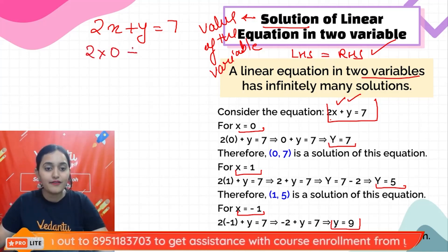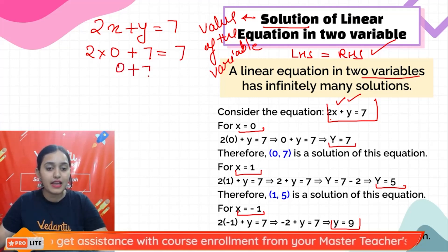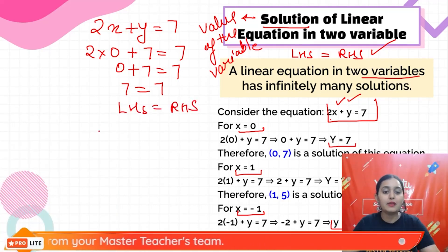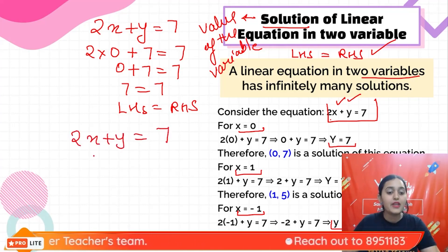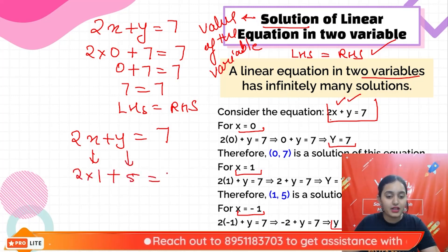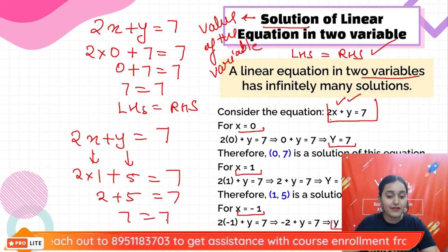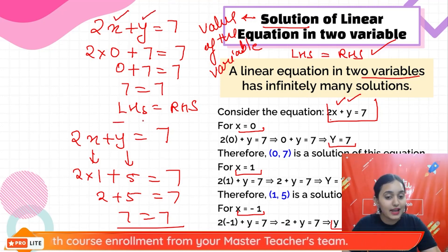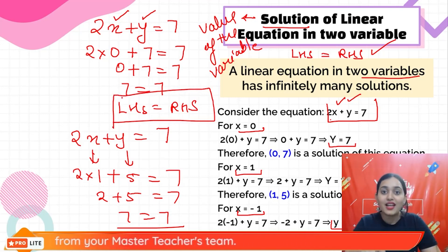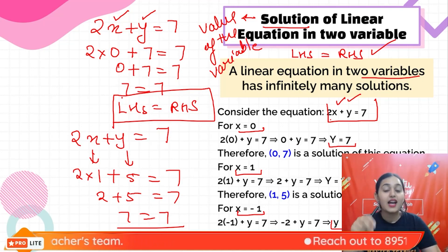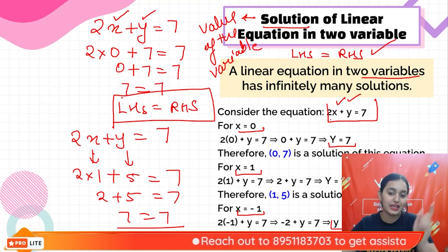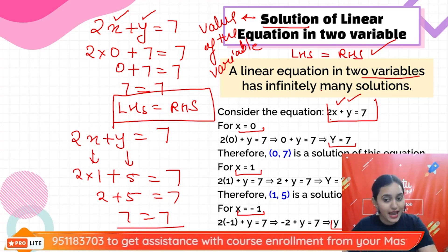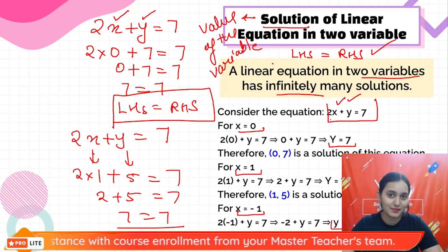Let me verify with examples. If x = 0 and y = 7: 2(0) + 7 = 7, so 7 = 7 — LHS equals RHS. If x = 1 and y = 5: 2(1) + 5 = 7, so 7 = 7 — again LHS equals RHS. This proves that solutions of a linear equation in two variables can be infinitely many.